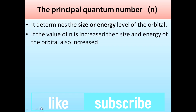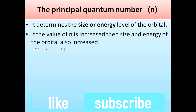Let's start with the principal quantum number. The principal quantum number tells us about the size and energy of the orbital. As the principal quantum number increases, the size and energy of the orbital also increases. When n = 1, that is the first shell, K.